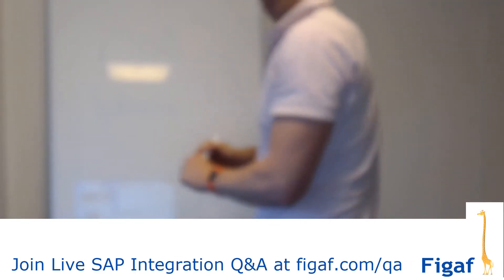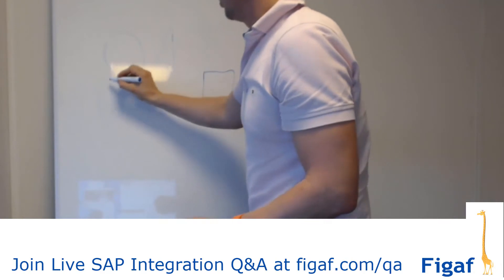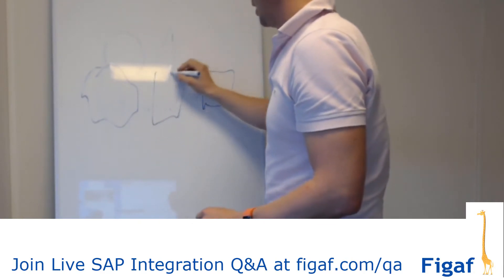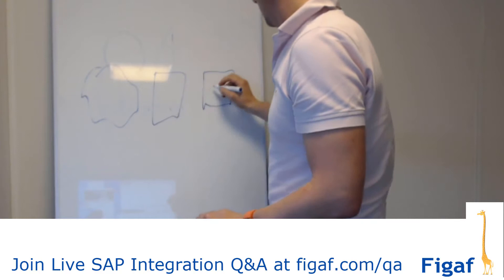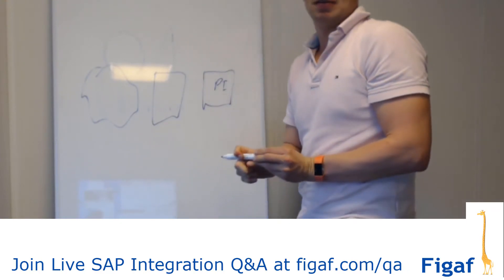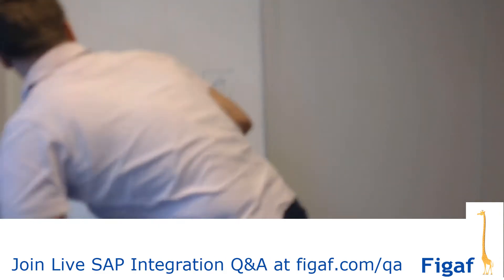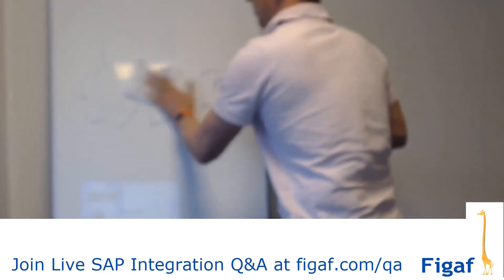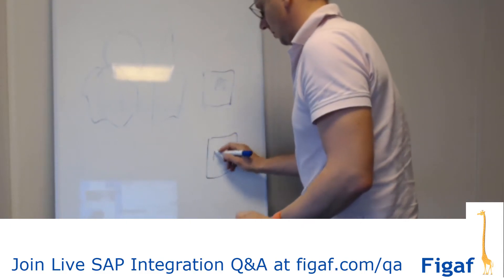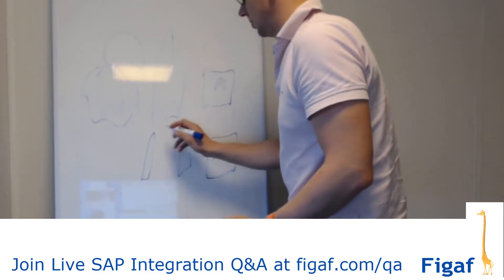So if you have your PI system here, you have your internet here and you have your firewall inside here. Let me put it a little lower down so we don't get reflection on it. So: PI, firewall, and maybe a second firewall too.